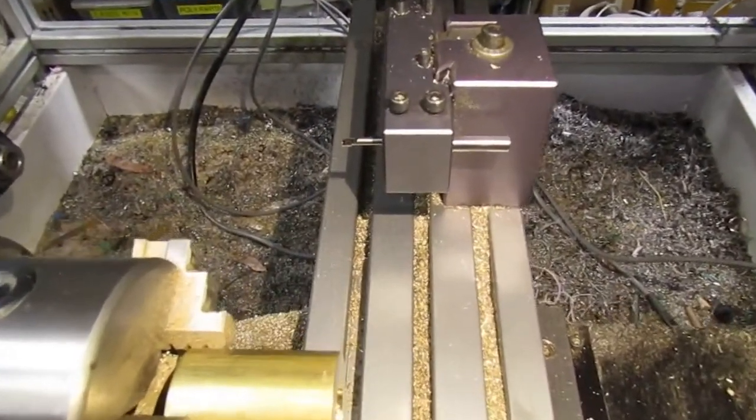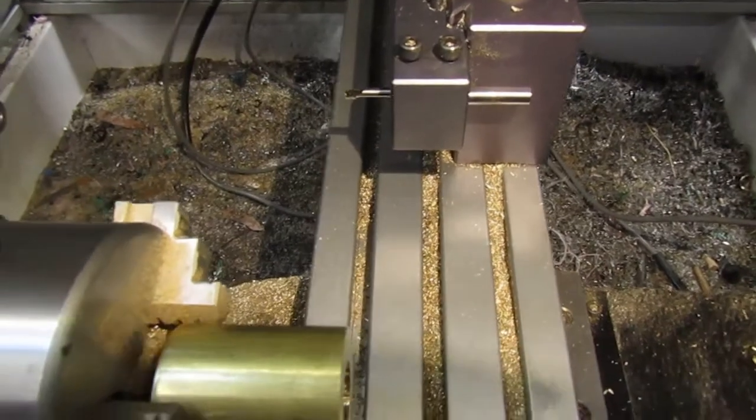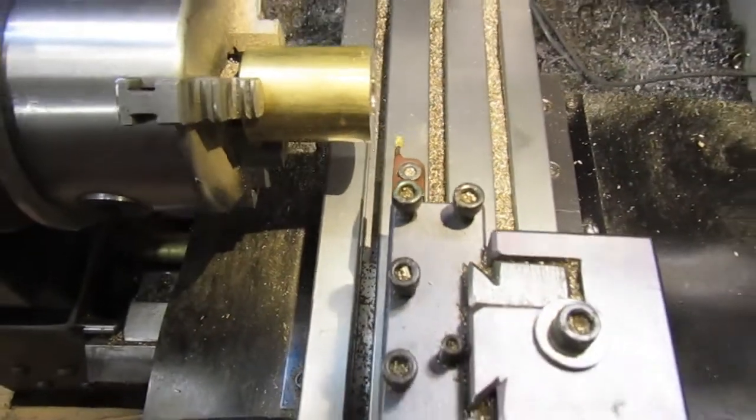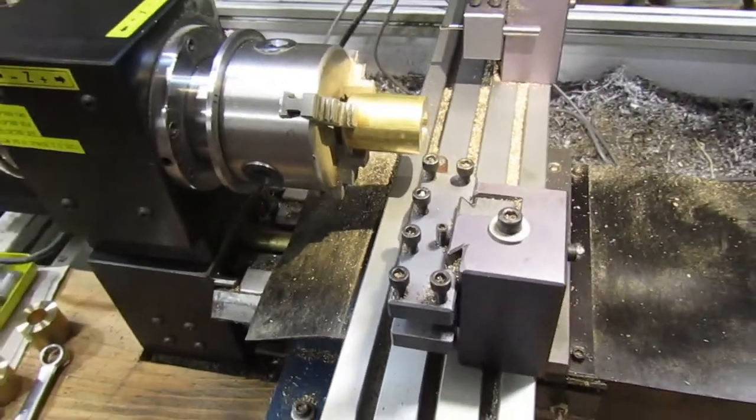Normally we choose an appropriately sized collet to hold our stock. Unfortunately this part is a little too large, so in order to accommodate it we instead mounted our three jaw chuck.